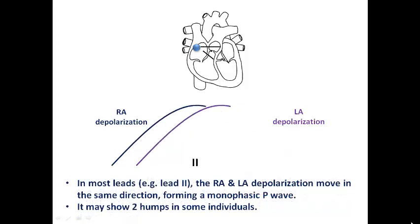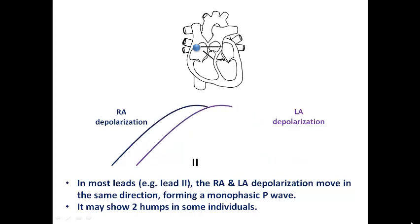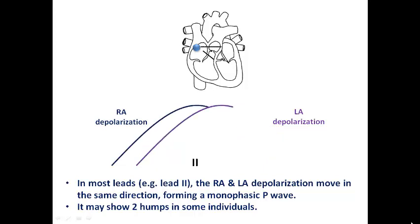In most leads, these two forms of depolarization move in the same direction, forming a monophasic P wave. Sometimes you may normally see two humps in some individuals, but in most ECG leads it would be monophasic. In lead 2, because the positive pole is at +60 degrees, we expect the P wave to be positive and monophasic. So the answer is yes: right atrial depolarization starts before left atrial depolarization, but with a very short time interval.